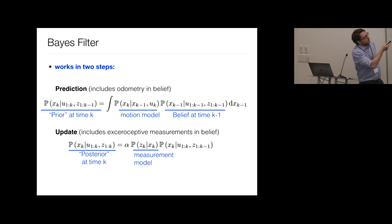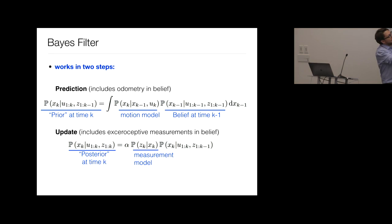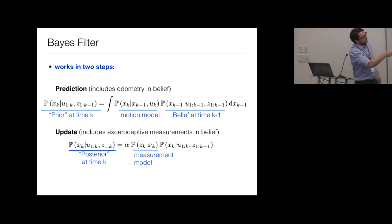If sensors are synchronized, you can apply multiple prediction steps and update when you get camera measurements. If they are not synchronized, you need to synchronize them. The normalization constant α just ensures the result integrates to one — a probability — and you typically don't need to compute it explicitly.